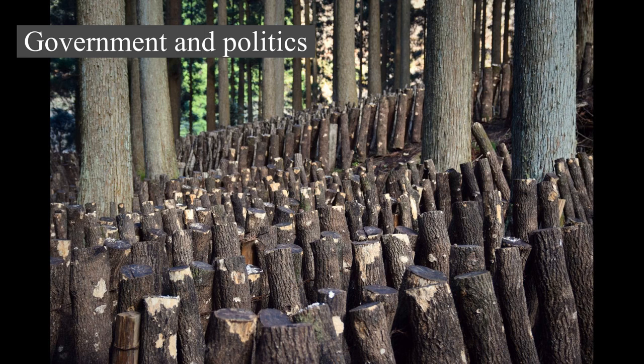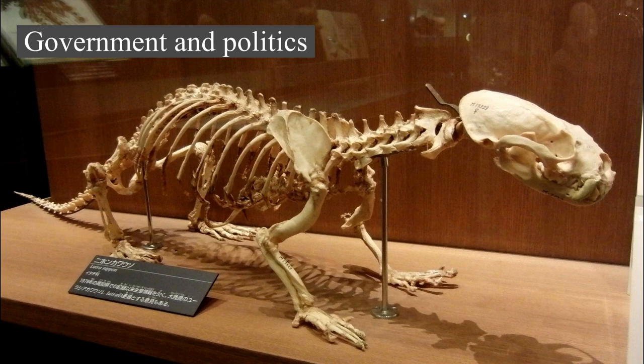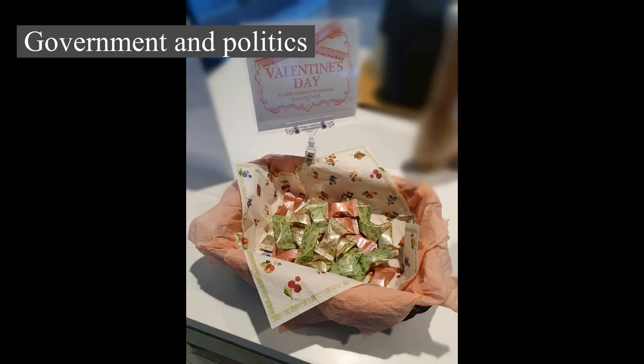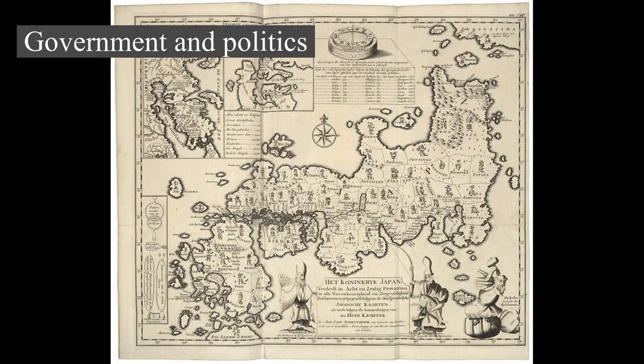Historically influenced by Chinese law, the Japanese legal system developed independently during the Edo period. Since the late 19th century, the judicial system has been largely based on the civil law of Europe, notably Germany. In 1896, Japan established a civil code based on the German Bürgerliches Gesetzbuch, which remains in effect with post-World War II modifications. The Constitution of Japan, adopted in 1947, is the oldest unamended constitution in the world. Statutory law originates in the legislature, and the constitution requires that the emperor promulgate legislation passed by the Diet without giving him the power to oppose legislation. The main body of Japanese statutory law is called the Six Codes. Japan's court system is divided into four basic tiers: the Supreme Court and three levels of lower courts.